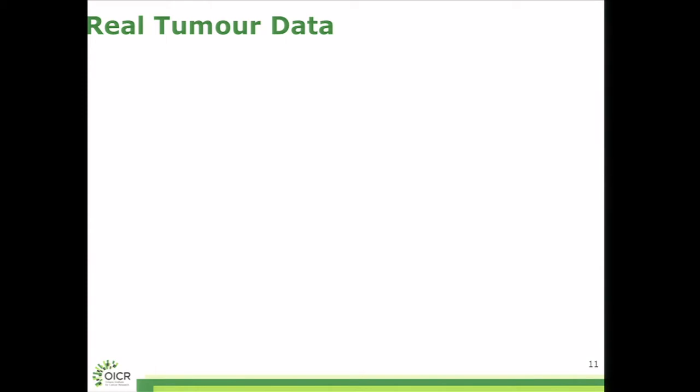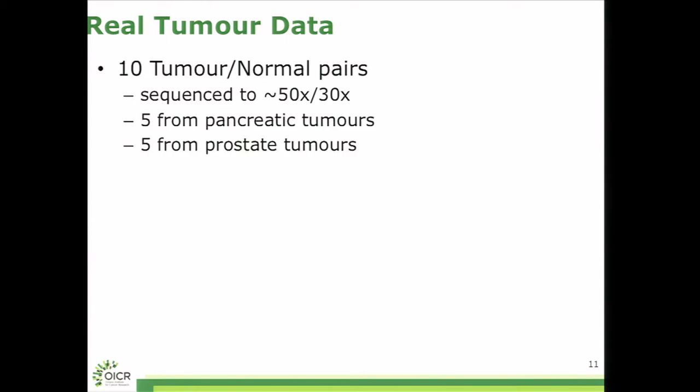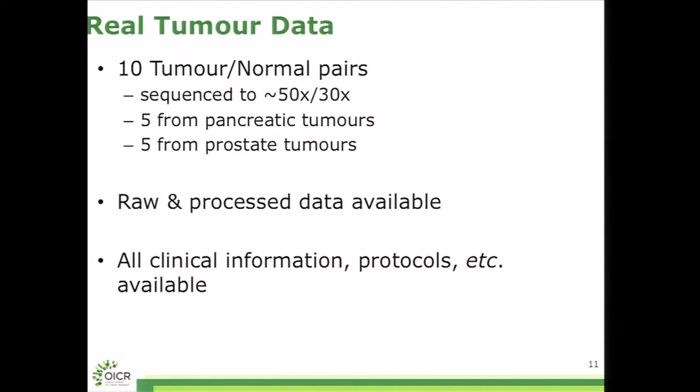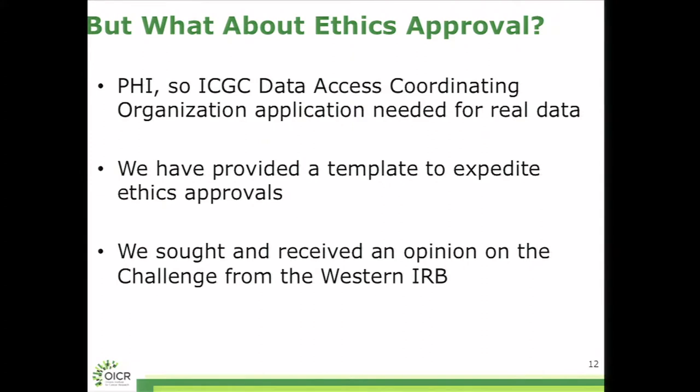We started off saying that this should be only real tumor data. We backtracked on that a bit, but at the beginning we said we'd start off with a series of 10 tumor normal pairs. We chose them from two different tumor types that vary very substantially in the cellularity. Pancreatic is very low cellularity, prostate is quite high. We looked at raw and processed data. So we looked to make available FASQ files, BAMs, aligned a couple of different ways, and all of the clinical information or protocols that somebody might want to know. How did you extract the DNA? What age is the patient? Those sorts of pieces of information.